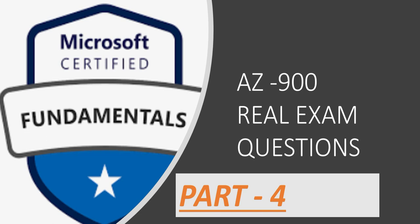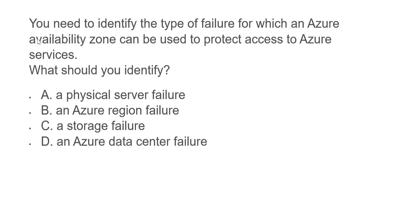Let's look at the first question. You need to identify the type of failure for which an Azure availability zone can be used to protect access to Azure services. What should you identify? Basically, if the AZ goes down, which type of failure requires a failover to another AZ? Let's refresh: which type of failure requires switching the failover option to a different AZ?